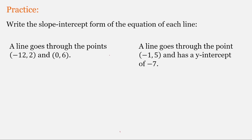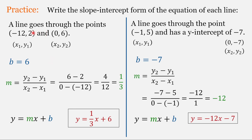A great way to learn is to practice on your own. Go ahead and pause your screen and do these two problems. For the first example, we have two ordered pairs; one is the y-intercept (0, 6), so b equals 6. The slope works out to 1/3, giving us y equals (1/3)x plus 6. For the second problem, we're given one ordered pair and a y-intercept of negative 7, with a slope of negative 12, giving us y equals -12x minus 7.